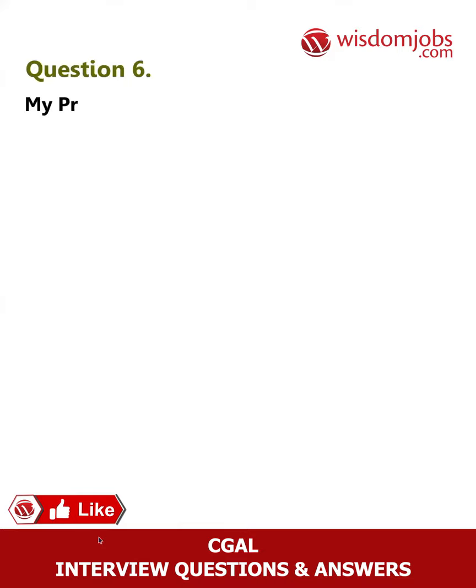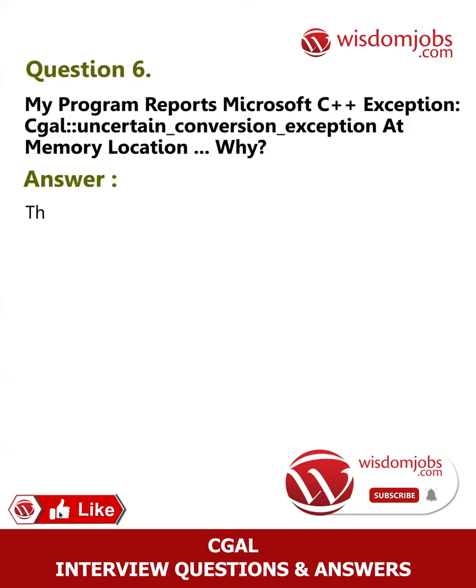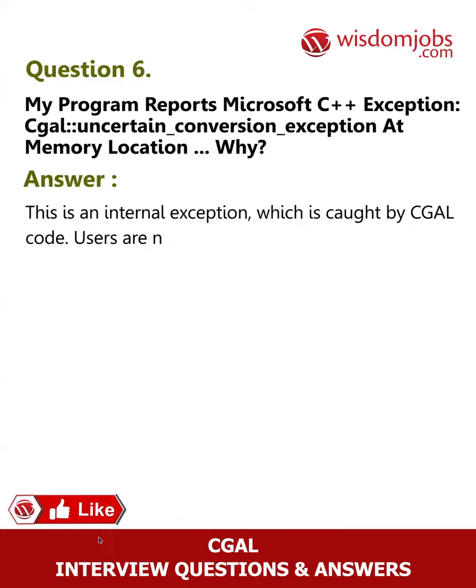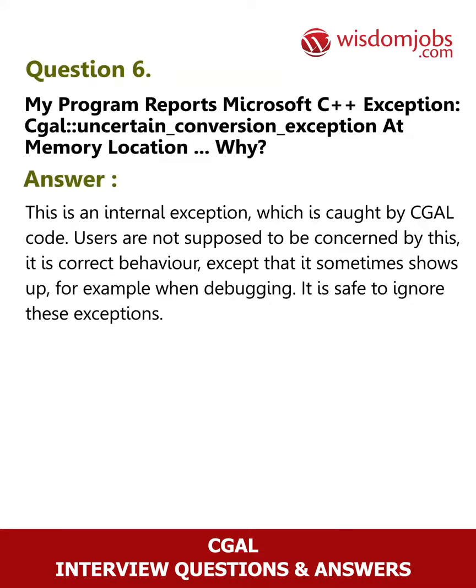Question 6: My program reports a Microsoft C++ exception CGAL::Uncertain_conversion_exception at memory location. Why? Answer: This is an internal exception which is caught by CGAL code. Users are not supposed to be concerned by this — it is correct behavior, except that it sometimes shows up when debugging. It is safe to ignore these exceptions.